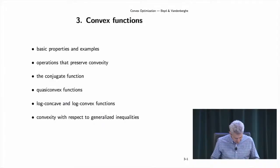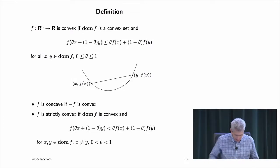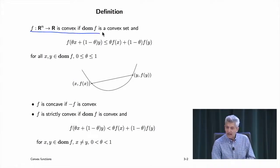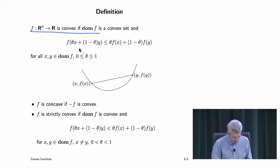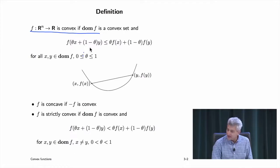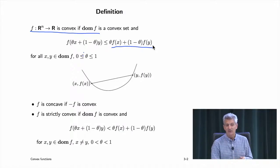We're going to start on convex functions. The definition is very simple. A function is convex if its domain is convex, and if it satisfies this inequality: if I take a mixture of two points — theta between 0 and 1 — and form theta x plus 1 minus theta y, evaluate f there, that's less than or equal to the same convex combination of the values of f evaluated at the end points.